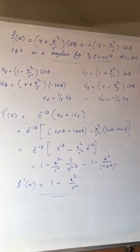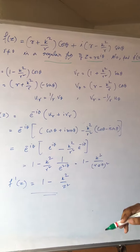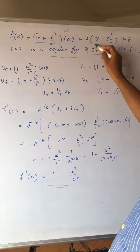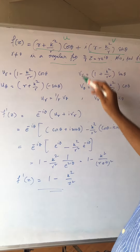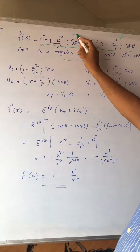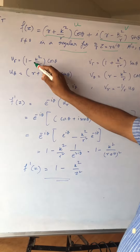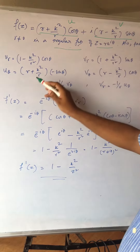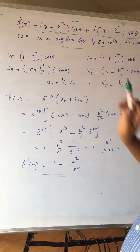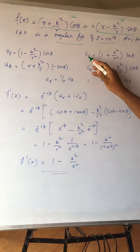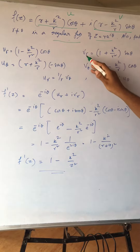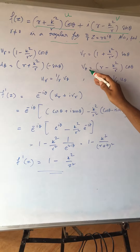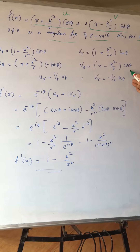We have f(z) = r·e^(iθ). I have considered the real part as u and the imaginary part as v. When I partially differentiate u with respect to r, I get (1 - k²/r²)cosθ, and partially differentiating with respect to θ gives -sinθ. For v, partially differentiating with respect to r gives sinθ, and partially differentiating with respect to θ gives cosθ.